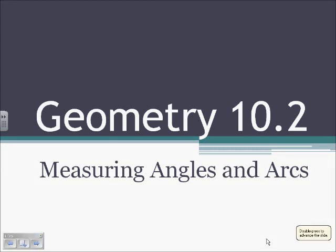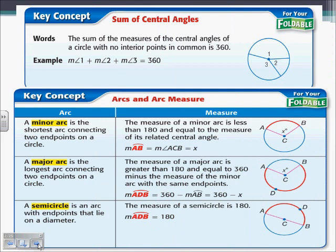Lecture 10.2 is on measuring angles and arcs. We have central angles. The sum of the central angles of a circle with no interior points in common is 360. The central angle is the angle formed from the center and two radii. Angle one, angle two, and angle three are all central angles, and the measure of those are always going to add up to be 360 degrees.